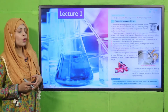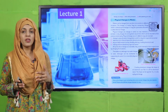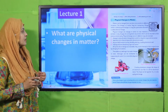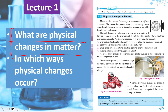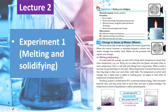My dear students, as you know we have completed all the student learning outcomes from this chapter. So let's quickly revise all of them. In lecture number one, we discussed what are the physical changes in matter. When a matter is changed in size and shape and a new product is not formed, this is called a physical change. Physical changes occur in change in size or shape, and they are temporary and reversible.